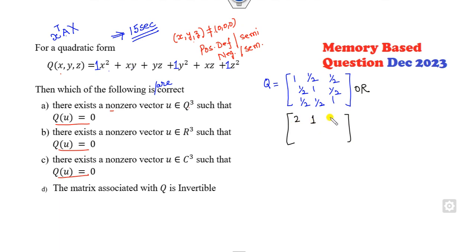This is always a symmetric matrix. Or you can write this matrix instead by taking 2 common so that it becomes easier instead of taking the fraction.